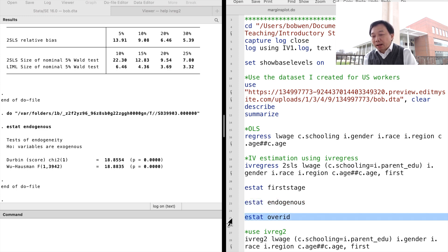The third post-estimation test is the over-identifying restriction test. It is for the case when we have more instrumental variables than the endogenous explanatory variables. In our sample, we use the parent's education dummy variables as instruments, which means there are three instruments and only one endogenous variable.